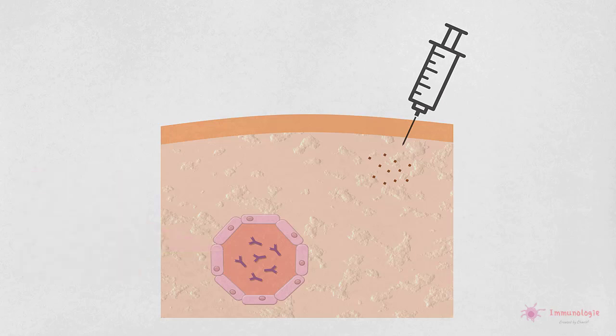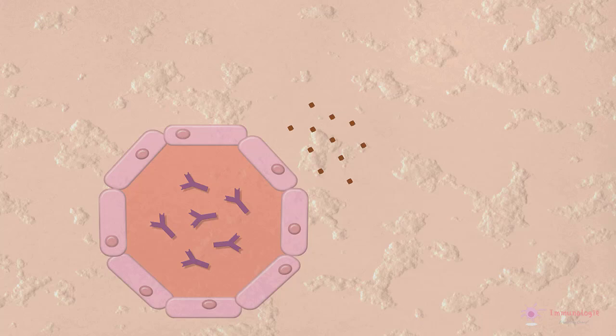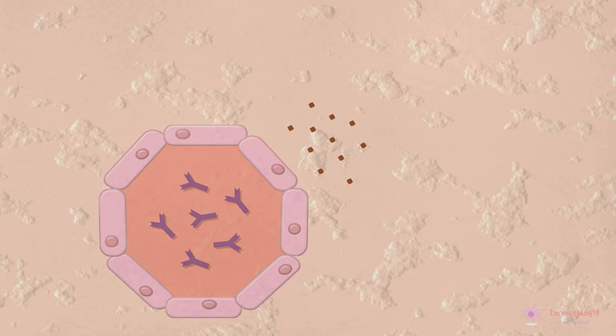L'antigène se diffuse dans les parois des vaisseaux sanguins locaux et les anticorps se lient rapidement à l'antigène injecté et forment des complexes qui se déposent dans les vaisseaux sanguins au site d'injection.